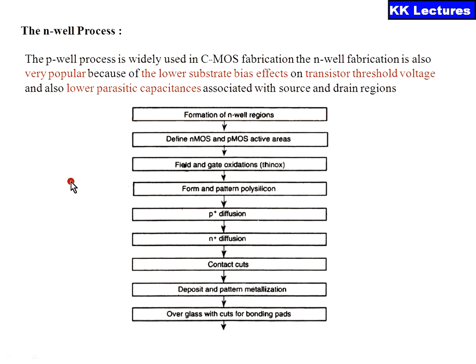The N-Well process and P-Well process are both similar, and the P-Well process is mostly used. The P-Well process is widely used in CMOS fabrication. The N-Well process is also very popular because of the low substrate bias effect, lower transistor threshold voltage, and also low parasitic capacitance associated with source and drain regions.